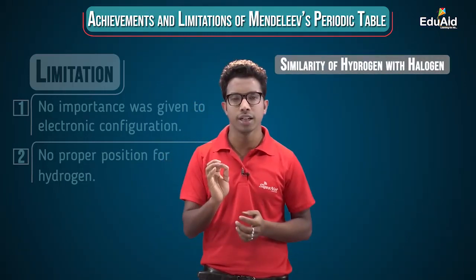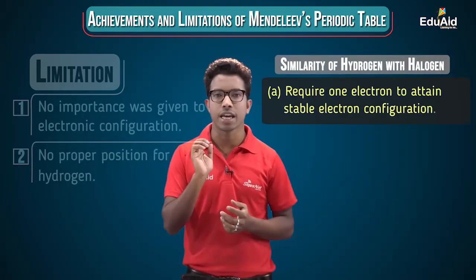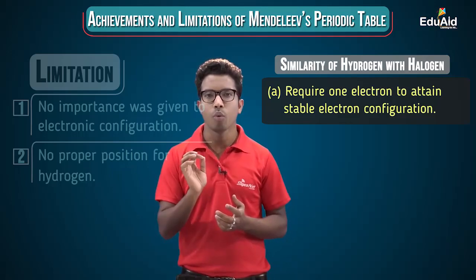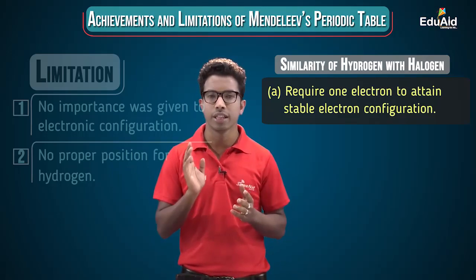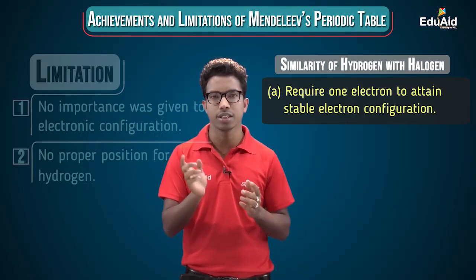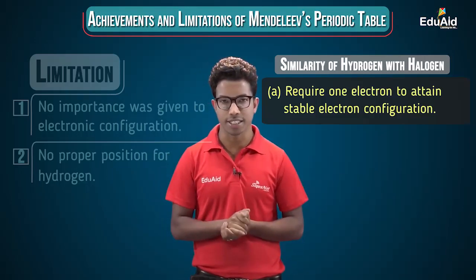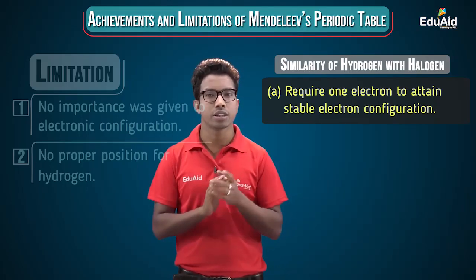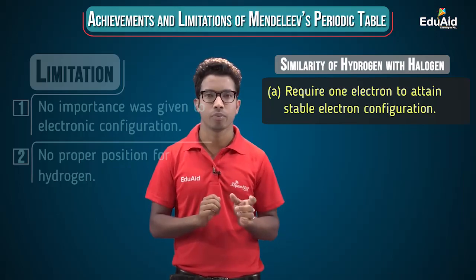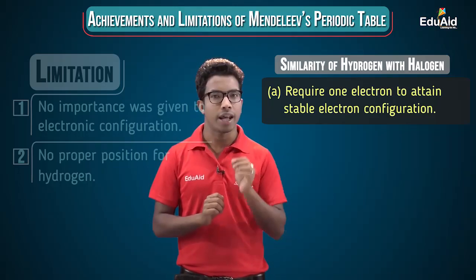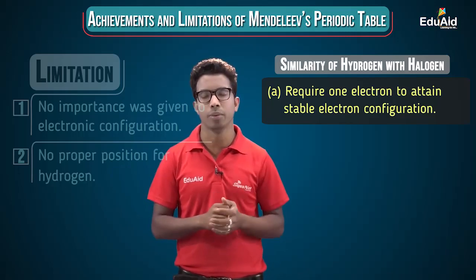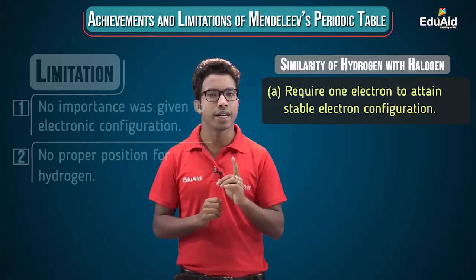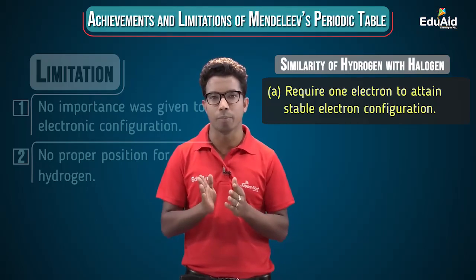Now, the similarities between hydrogen and halogens: halogens contain seven electrons in their valence orbital and require only one more electron to attain stability — the noble gas electronic configuration. Hydrogen, which has only one electron, also requires one electron to attain the electronic configuration of helium, a noble gas. So both hydrogen and all halogens require one extra electron to attain stability.